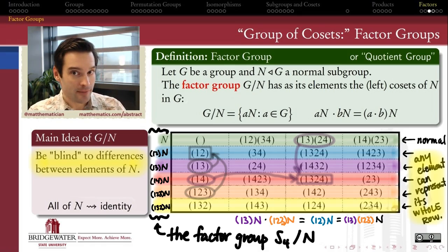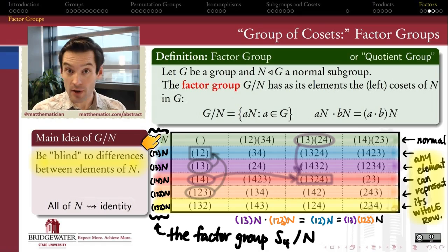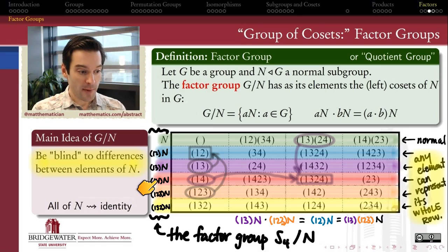And before we move on, let's also answer the question to which group of order 6 that we already know is this factor group going to be isomorphic. To make that observation, remember that we need to be blind to differences between elements that are in the same coset of N. So where I have (1 4) as being the representative of this red row, this red coset, I could just as well have represented it by (2 3) instead. So I'm going to take the liberty of adjusting that representation.